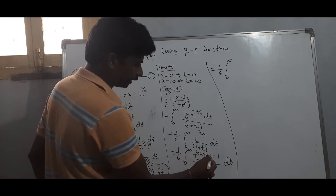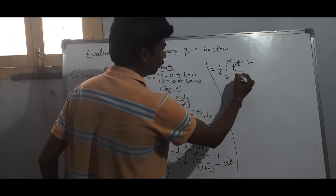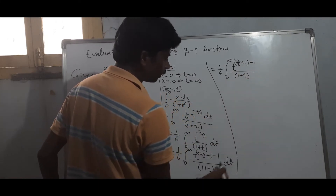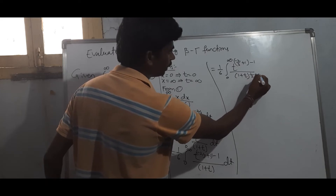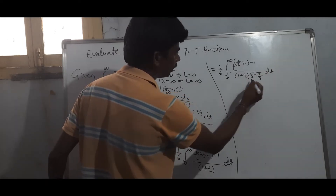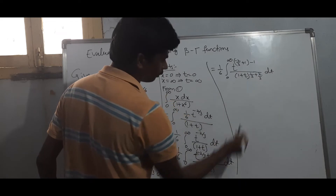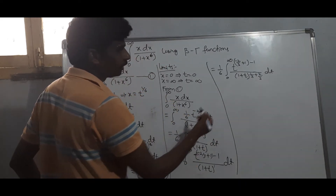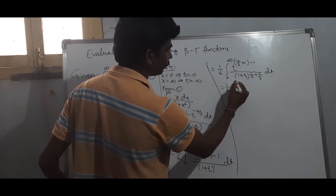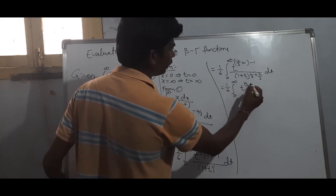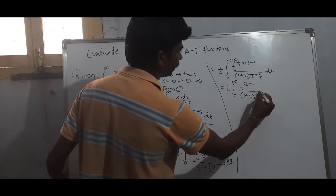Simplifying the powers: the exponent becomes (1/3 plus 2/3) with denominator 3. We get (1 by 3 plus 2 by 3) in the exponent. This gives us (1/6) times the integral from 0 to infinity of t to the power (1/3 minus 1) divided by (1 plus t) to the power (1/3 plus 2/3) dt.